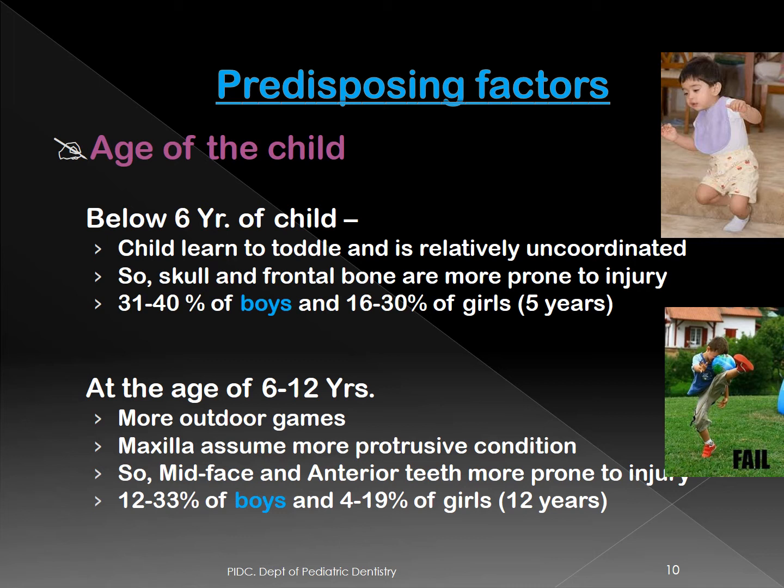Looking at predisposing factors: children below six years are more prone because of uncoordinated muscular activity, and their skull and frontal bone are more prone to injury due to their developmental stage — the head is proportionally bigger compared to the rest of the body. Boys are marginally more prone to having dental injuries.